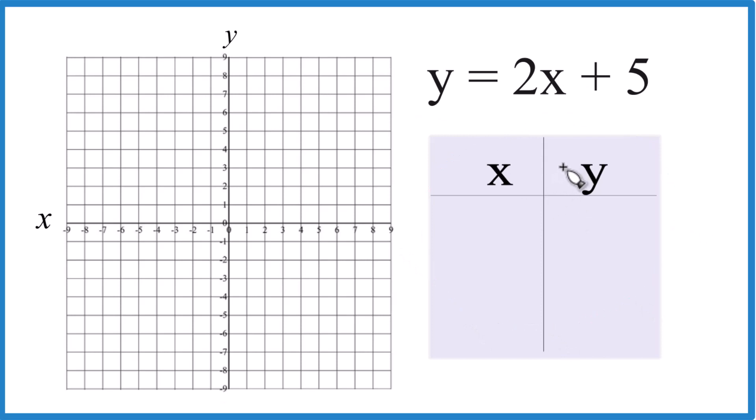If you need help using slope-intercept form to graph y = 2x + 5, there's a link in the description and at the end of the video. Let's put values in for x, we'll get values for y, and then we'll graph those points.